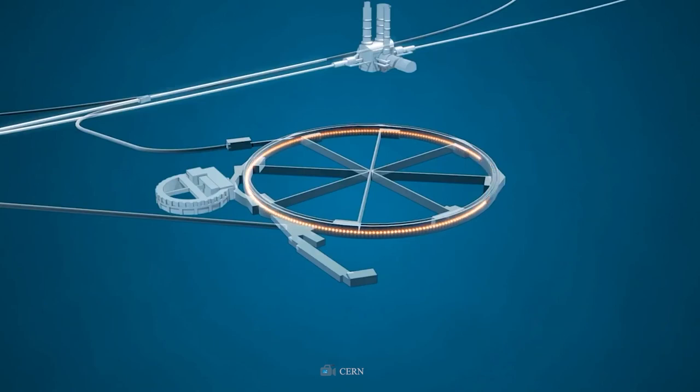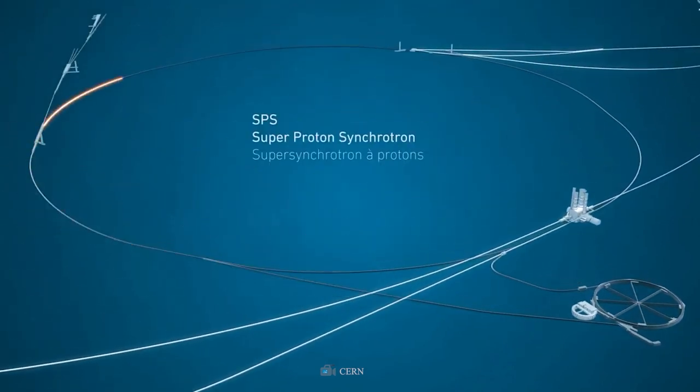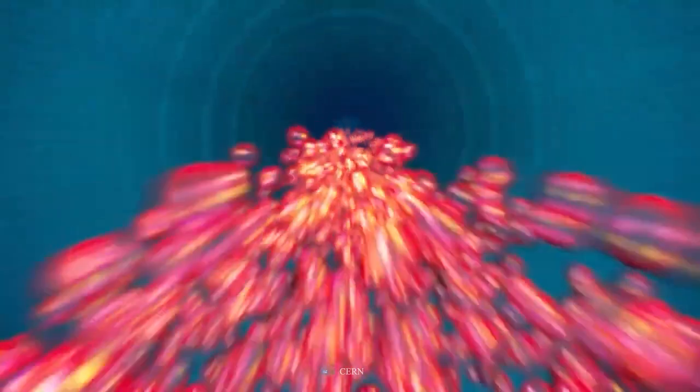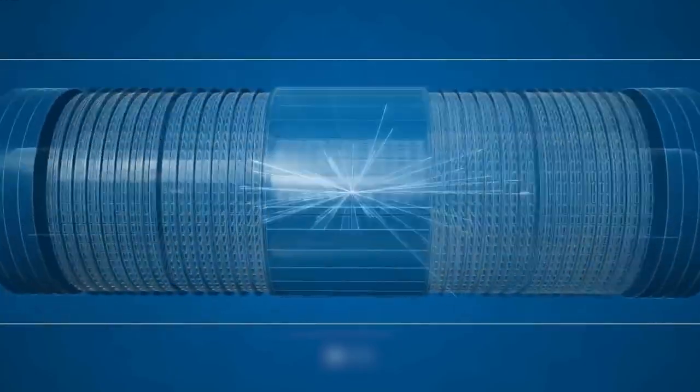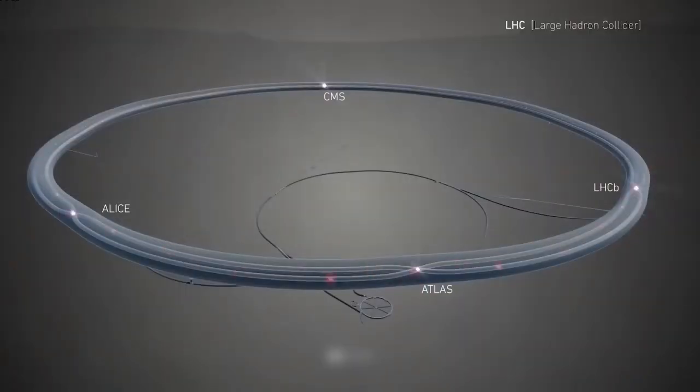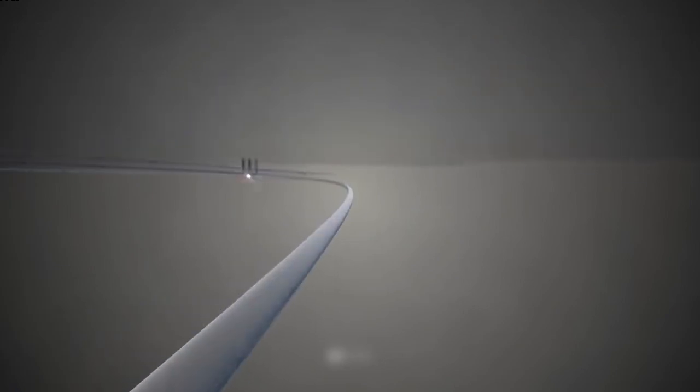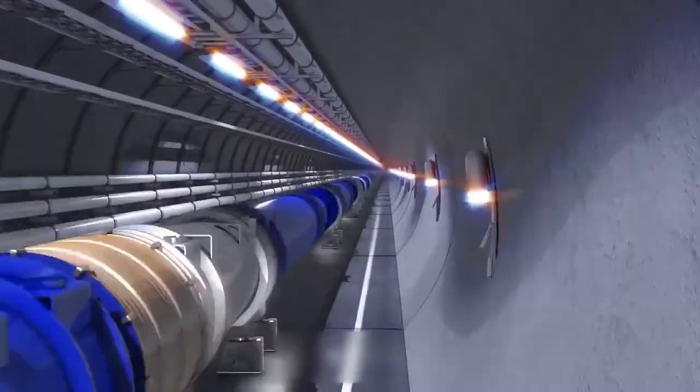It will be possible to generate more energy once improvements have been made to the injectors, which are used to accelerate particles just before they are injected into the LHC. Because of this, the previous world record for the energy produced by proton collisions, which stood at 13 TeV, has been surpassed, and the new limit stands at 13.6 TeV.